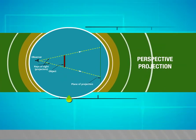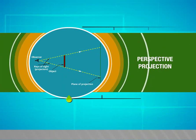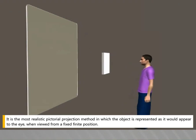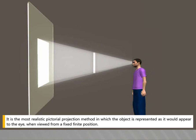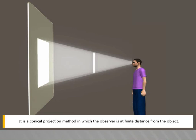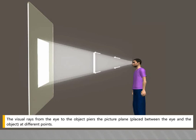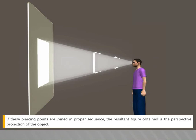In this video we are going to see about perspective projection. It is the most realistic pictorial projection method in which the object is represented as it would appear to the eye when viewed from a fixed, finite position. It is a conical projection method in which the observer is at finite distance from the object. The visual rays from the eye to the object pierce the picture plane at different points, and if these piercing points are joined in proper sequence, the resultant figure is the perspective projection of the object.